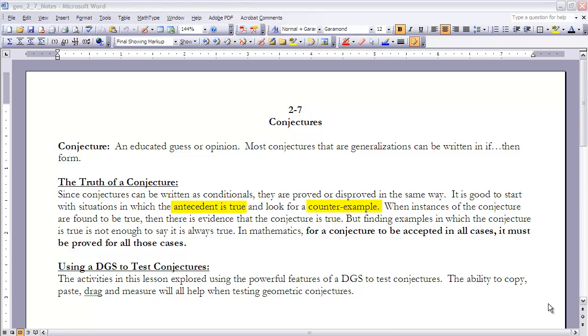It is good to start with a situation in which the antecedent is true and look for a counter example. In other words, you're looking for a situation where that antecedent is true but the consequence is false. If you do that, then you know that the conjecture is wrong - all you need is one of those.